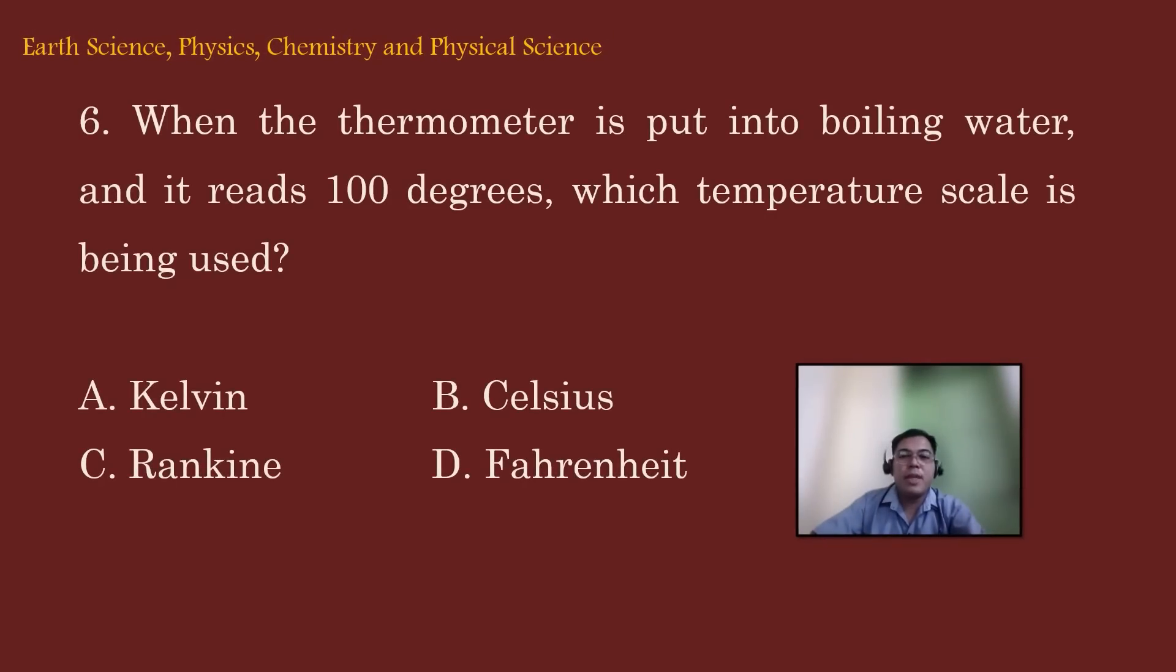Let's move on to item number 6. When the thermometer is put into boiling water and it reads 100 degrees, which temperature scale is being used? A. Kelvin, B. Celsius, C. Rankine, and D. Fahrenheit.